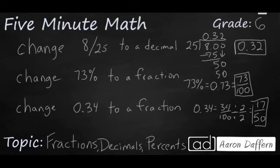For this first problem, we divide it up. 25 goes into 8. And our answer was 0.32. The second one, 73%. That equals 0.73, which is 73 over 100. Can't reduce. That's the simplest form. And then finally, 0.34 to a fraction. 0.34 is 34 over 100. We did have to reduce that. And the answer is 17 over 50.